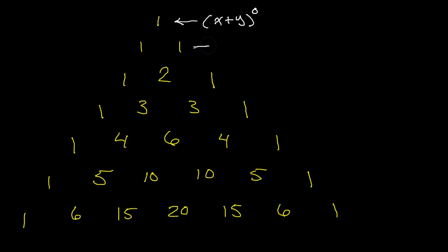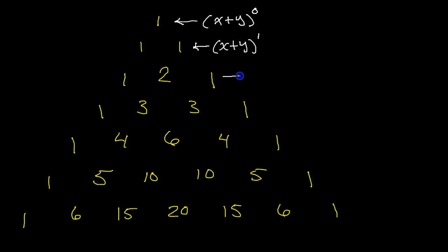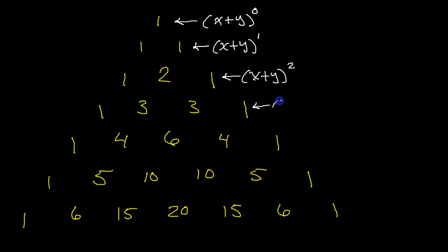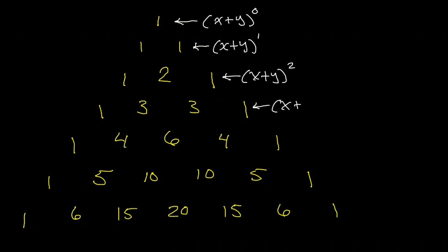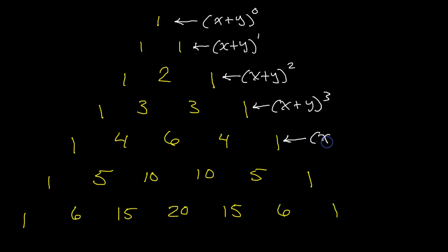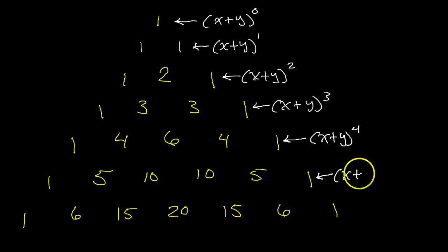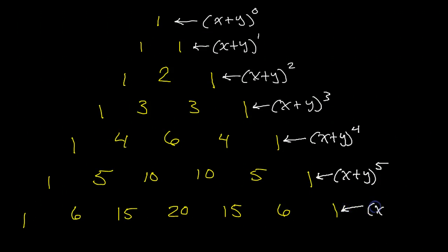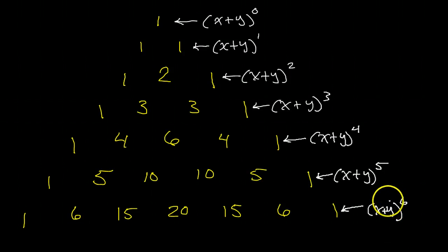So if I took some binomial — I'm just going to call it x plus y, keep it general — this first row would be the coefficient if you did x plus y to the zero power, which makes sense because anything to the zero power is just one. The next row down would be the binomial to the first power, then binomial squared, then to the third power, fourth power, fifth power, and sixth power.